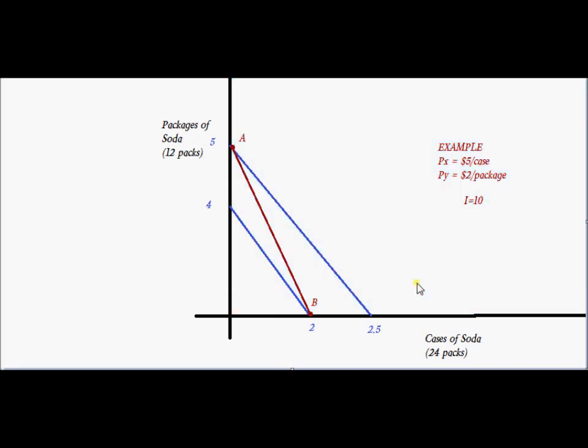Let's do the same exercise with bundle A. What bundles does this guy prefer? He prefers the bundles above that indifference curve. What bundles can he afford? That's just the area under the budget constraint. As you can see at bundle A, there's no intersection between what I can afford and what I prefer. So bundle A is the best in the sense that I can't afford anything that would make me better off. That's the sense in which we think of A as optimal.